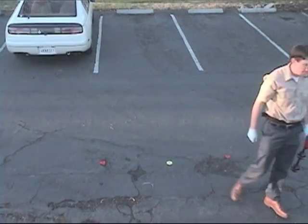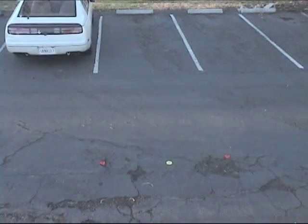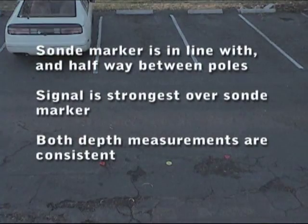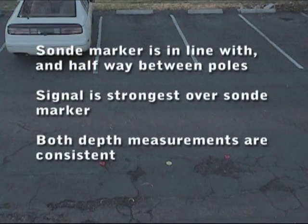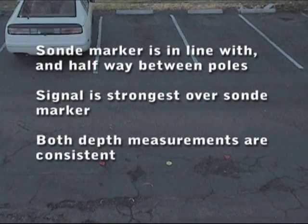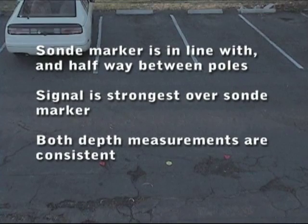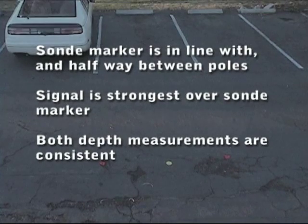When he's finished, he has three indications this is a good locate: the sonde marker is in line with the pole markers and about halfway between them; the signal strength is highest over the sonde marker; and the two depth measurements are very close to one another.